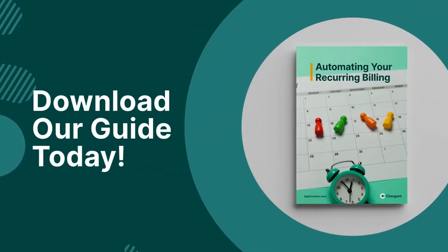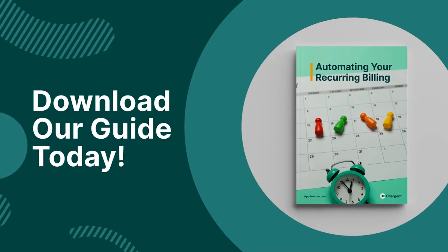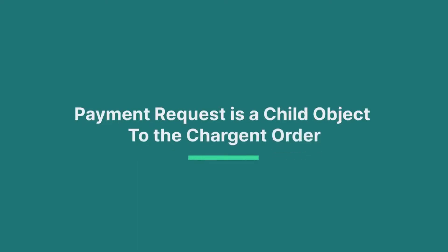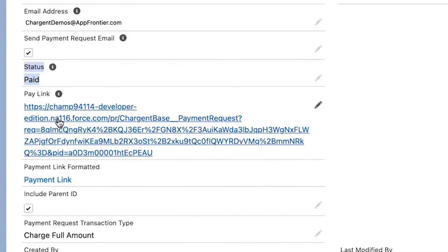You can reduce your accounts receivable and collection challenges in Salesforce with Chargent. Learn how Chargent can make your failed payments or overdue collections process configurable and automated, saving you time and money — download the guide from the link in the description. In this video, we assume that payment request is already configured. Let's review a little background: payment request is a child object to the Chargent order. A payment request record has statuses of created or paid; once paid, the link is no longer active, which prevents customers from overpaying. The Chargent order object is where the recurring billing fields and payment information are configured.